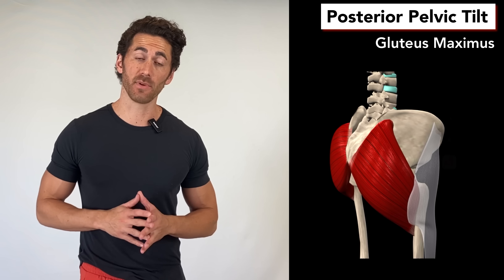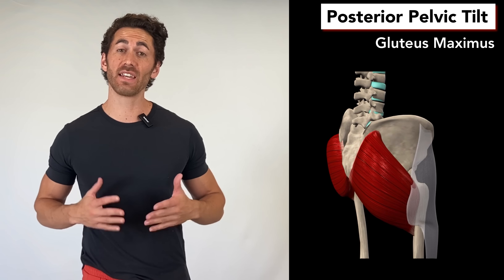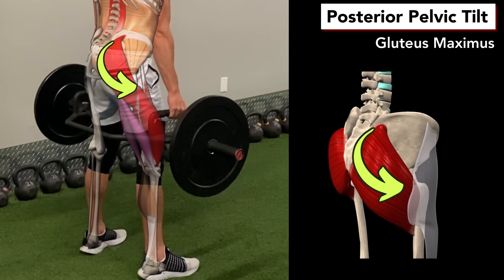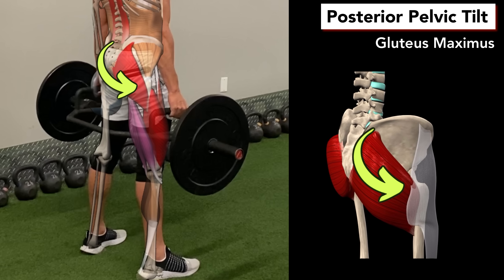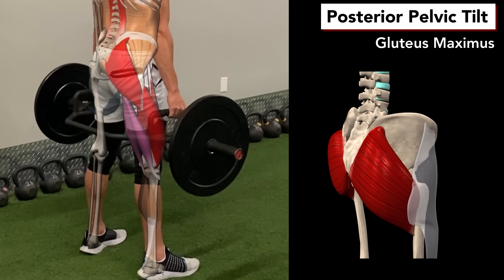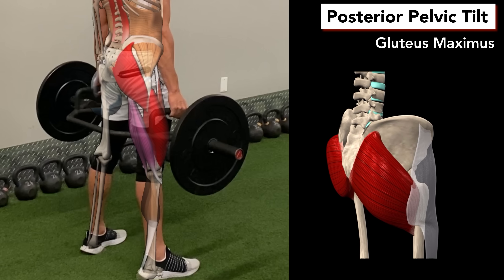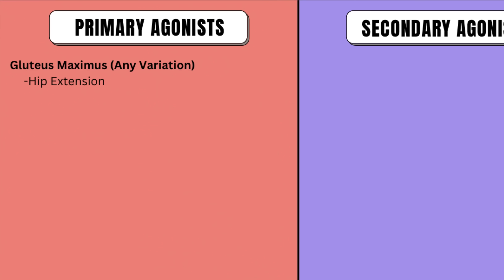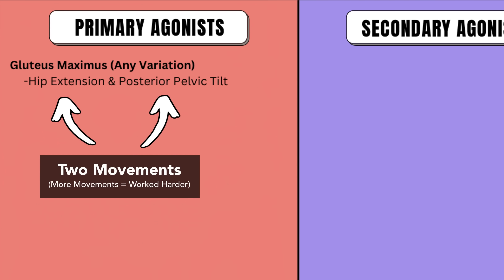The gluteus maximus also performs the posterior pelvic tilt, which you use to rotate your hips forward at the top in a full range of motion deadlift, making it a primary target via a second movement. In general, the more movements a muscle performs in an exercise, the harder it gets worked.